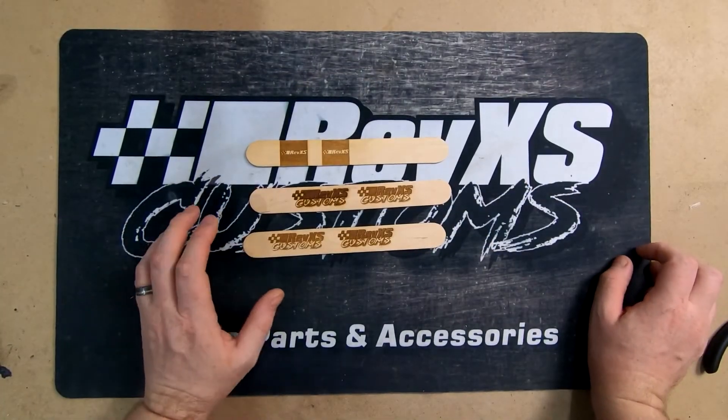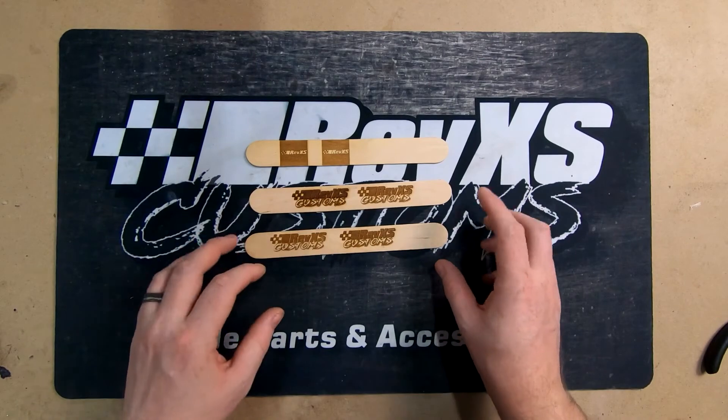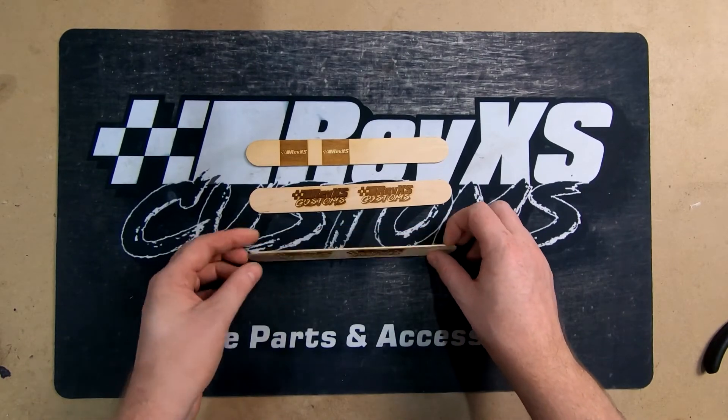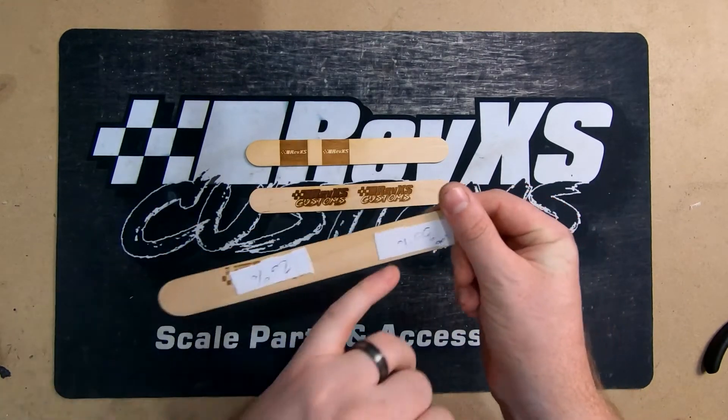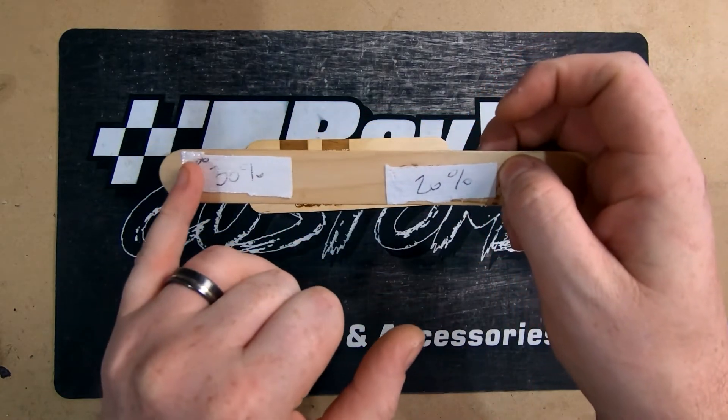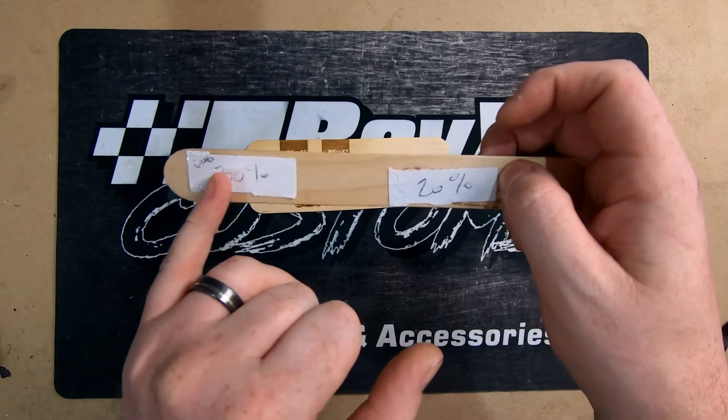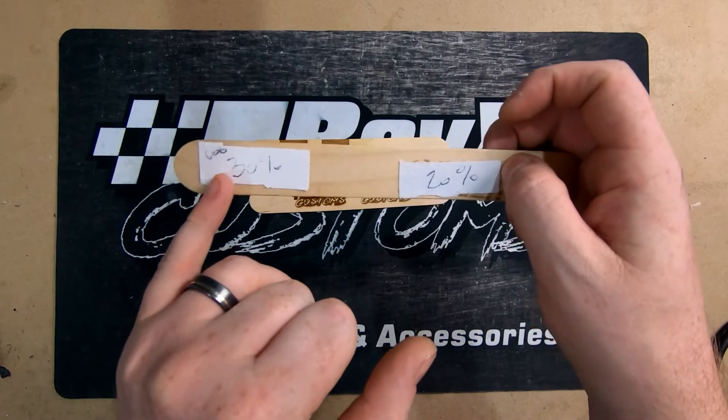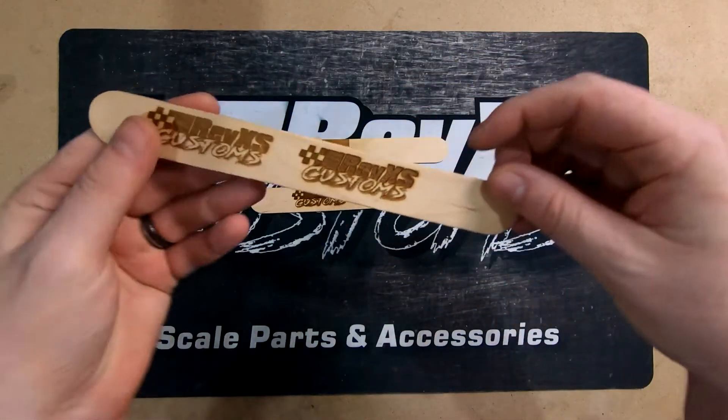Okay, so we ran a few tests. We just started pretty conservatively with some numbers that we'd found online. So we started with this one here and we've written on the back what they are. So this was at 30 percent power, 20 power, both at 600 millimeters a minute or 60 millimeters a second.